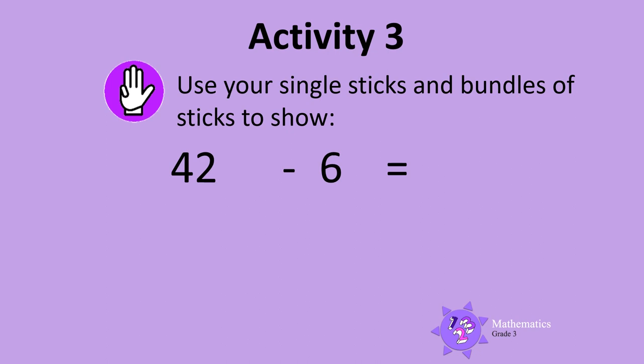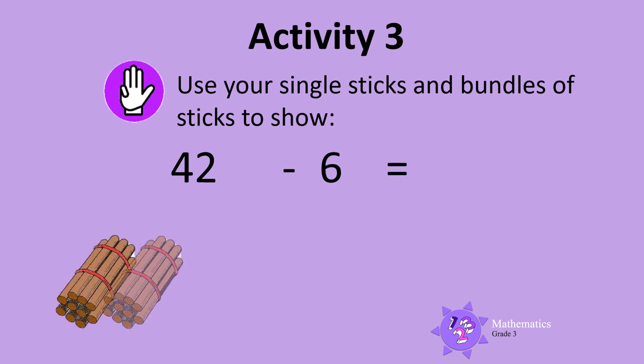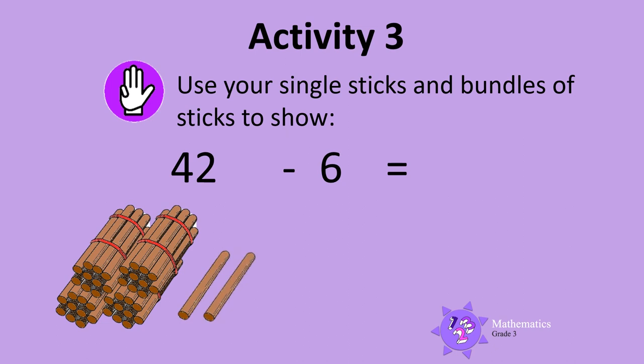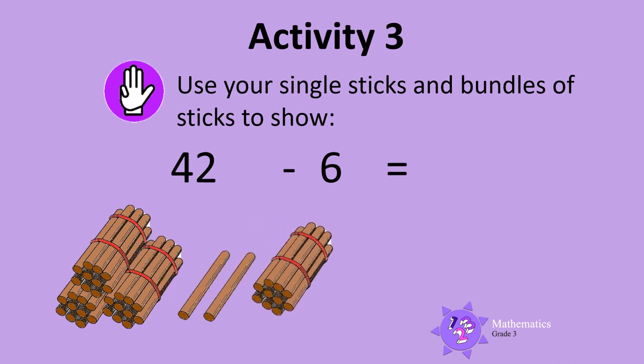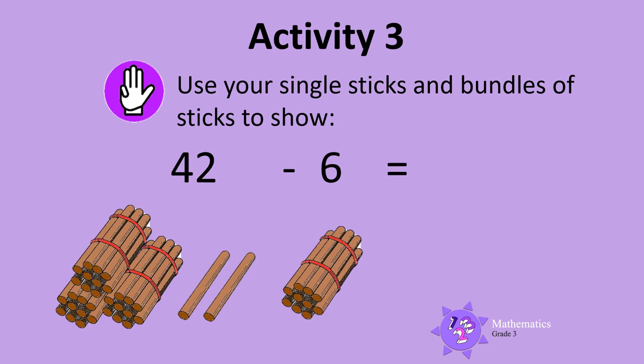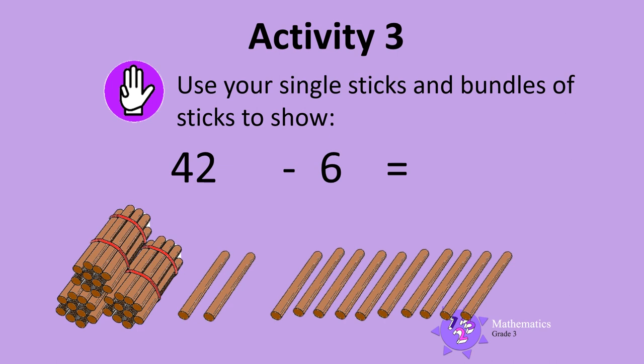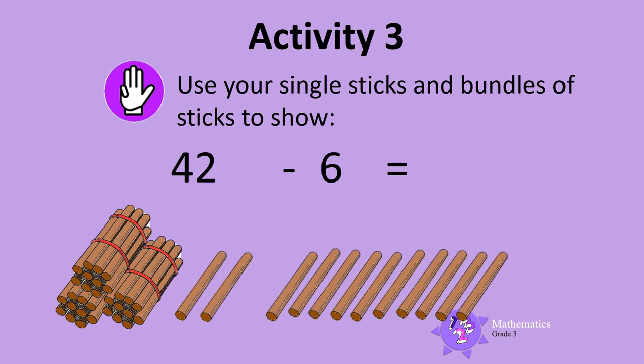Let's do one more. Use your single sticks and bundles of sticks to show the number that is 6 less than 42. Here are 42 sticks. We must take away 6 sticks. But we only have 2 single sticks. We need to unbundle 1 bundle of sticks. We now have 3 bundles of sticks and 12 single sticks. We can now take away 6 sticks.